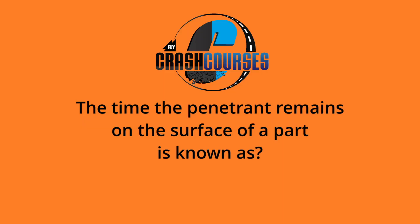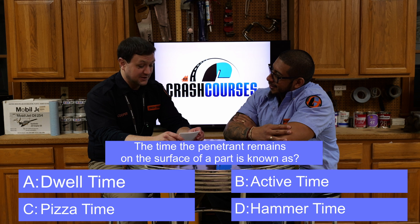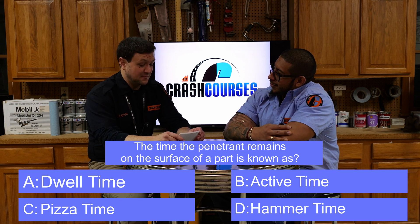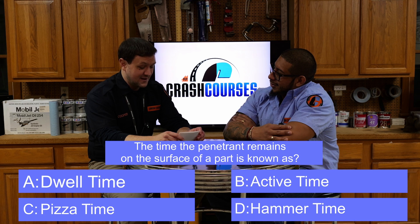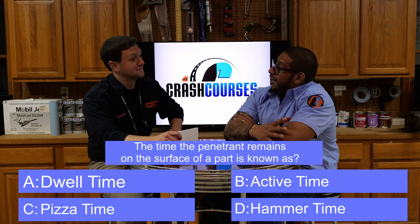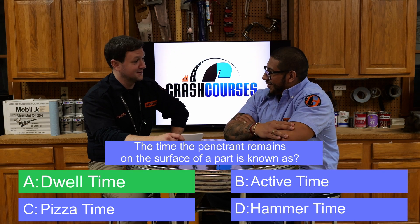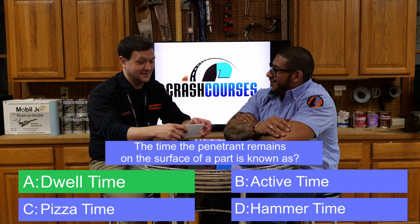The time that the penetrant remains on the surface of a part is known as what? A) the dwell time, B) the active time, C) pizza time, or D) hammer time? The answer is A — dwell time. Correct.